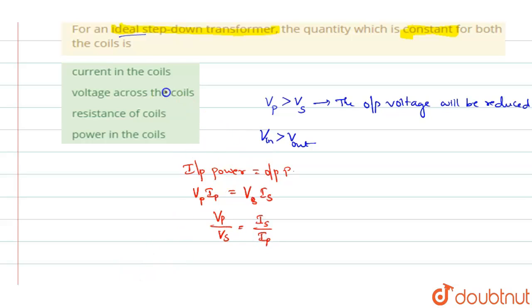You can say in the case of an ideal step down transformer, power in the coils remain same. Option D is the right answer.